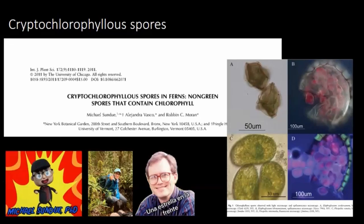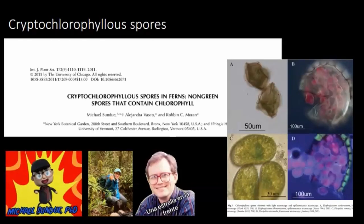Robin Moran and a couple of his graduate students at the time — Michael Sundew and Alejandro DeVasco — took a closer look at chlorophyllous spores and found that it is not so black and white — or should I say green and yellow. They found that some taxa have spores that do not appear to be green to the naked eye or under general light microscopy, but upon closer examination with epifluorescent microscopy do in fact contain chloroplasts — hence cryptochlorophyllous. Before this work, we thought chlorophyllous spores was a binary character, but now we know it exists along a spectrum. We still don't have a good understanding of how and why the degree of chlorophyll in spores varies with ecological niche.